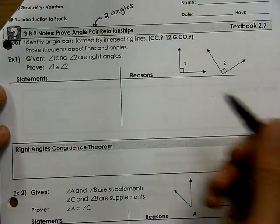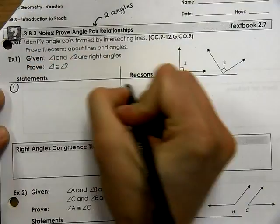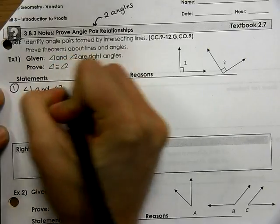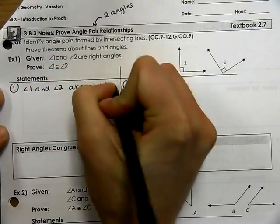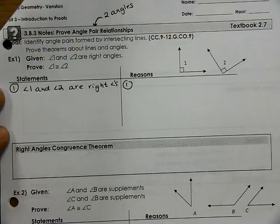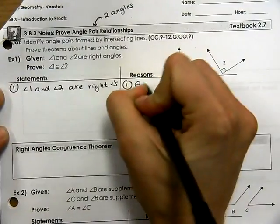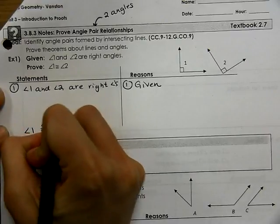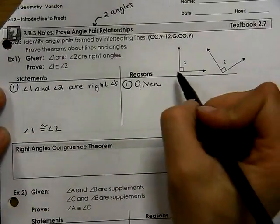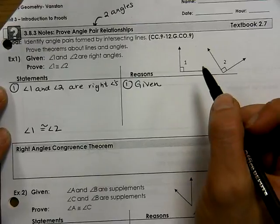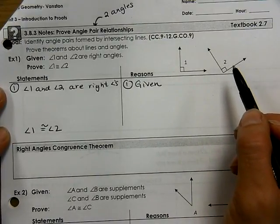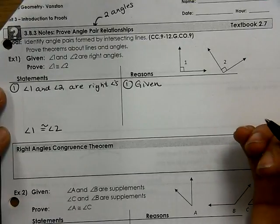So for the first one, go ahead and pause the video right now and try this one on your own. Now that you've done it on your own, this is how I would do it. I start with the given, as always. So angle 1 and angle 2 are right angles — that is the given. And what I want to conclude is that angle 1 is congruent to angle 2. My thought process: if they're right angles, I know that right angles have a measure of 90 degrees, and if they're both 90 degrees, they must be equal to each other, and therefore congruent.